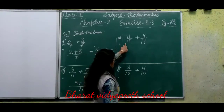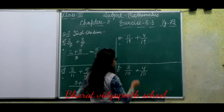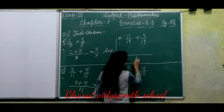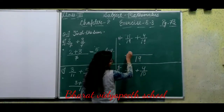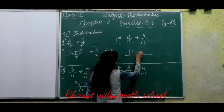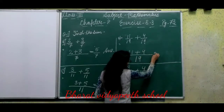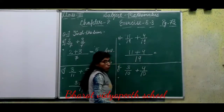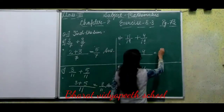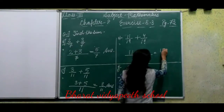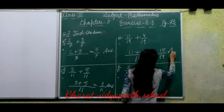Now see Part E: 11 upon 19 plus 4 upon 19. The denominator stays as it is. We add the numerators: 11 plus 4 equals 15. So our answer is 15 upon 19.